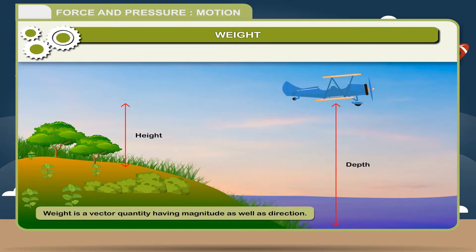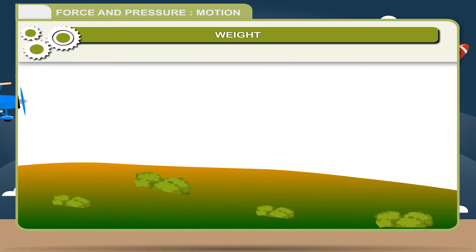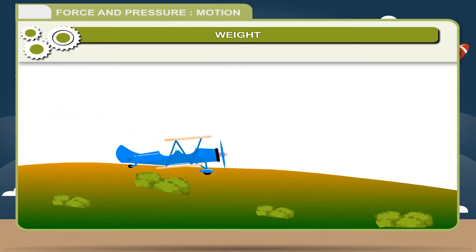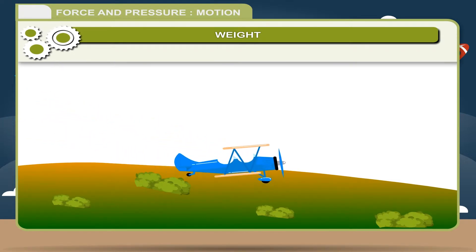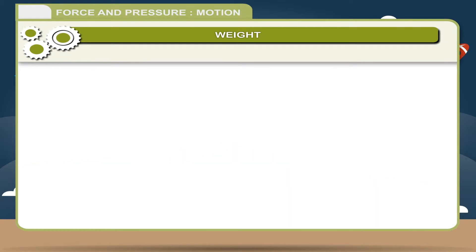Weight is a vector quantity having magnitude as well as direction. Whatever be the weight of a body on the surface of the earth, its weight becomes zero when it is taken to the center of the earth.